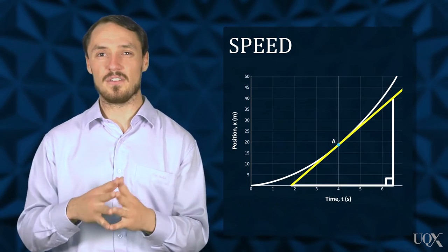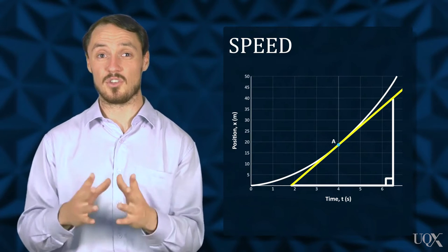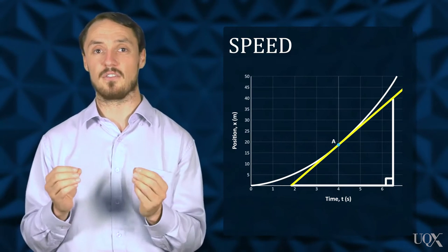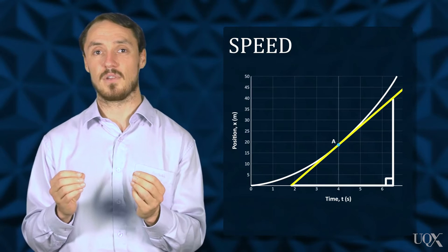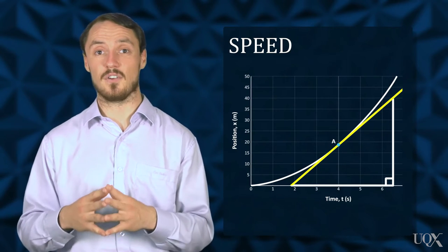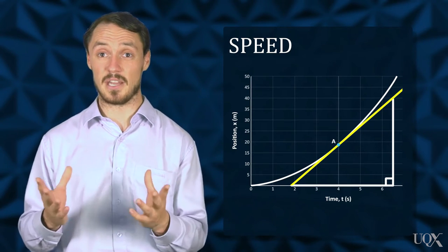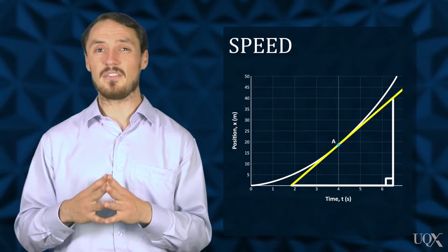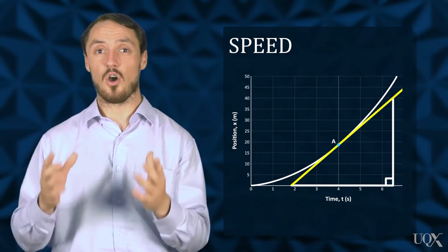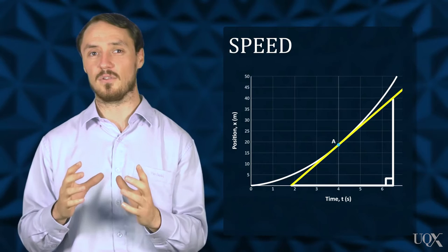Graphically, we demonstrated how the tangent to a position-time curve gives a measure of the instantaneous speed. The police use a variety of devices to calculate instantaneous speed, but these are actually a measure of average speed over an extremely small time interval.